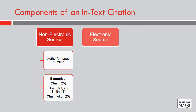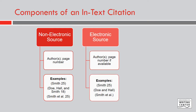If you are using an electronic source, like a website or a journal found through an online database, your in-text citation will look basically the same. However, many electronic sources do not have page numbers. In this case, it is appropriate to use only the last name of the author or authors. You can see this in these examples.